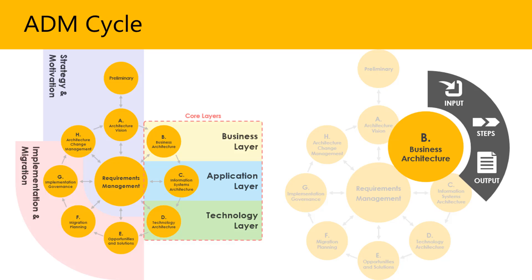Now let's take a look at the actual ADM cycle. There are two illustrations on this slide; I'll start with the left side. In the middle you'll notice Requirements Management, encompassed by several phases. The core layers are the business layer, application layer, and technology layer. These layers support the description of the business, information systems, and technology architecture domains defined by the TOGAF framework, as well as their interrelationships.